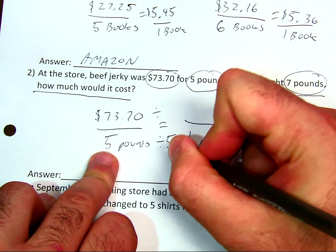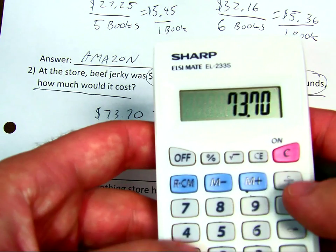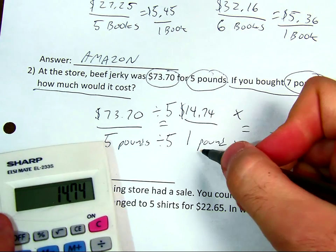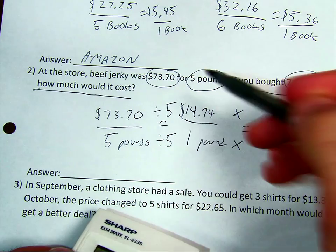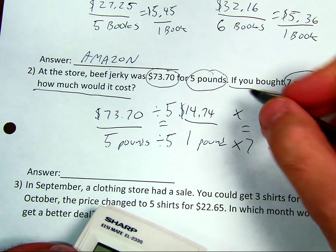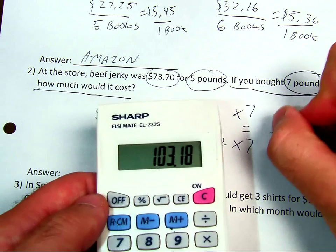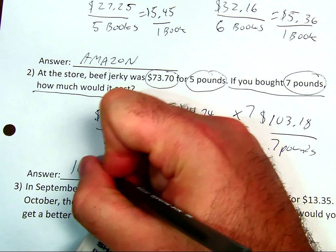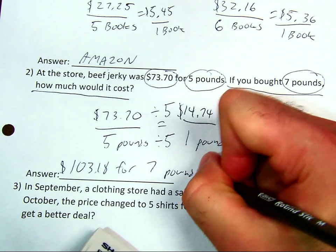Whatever I do to the bottom I also need to do to the top, so $73.70 divided by 5 equals $14.74 for one pound. But that's not what it's asking — it's asking how much seven pounds would cost. So I multiply: one times seven is seven pounds on the bottom, and $14.74 times 7 equals $103.18. So the answer is $103.18 for seven pounds.